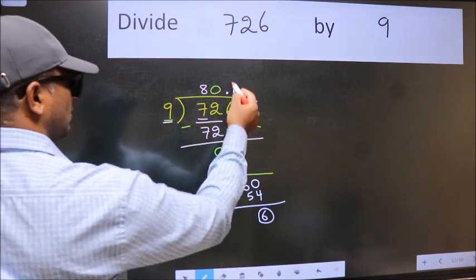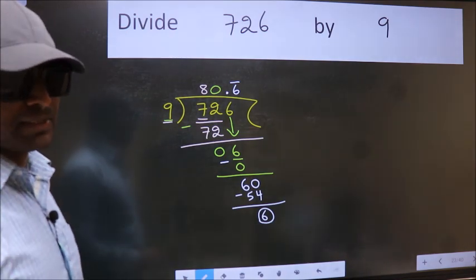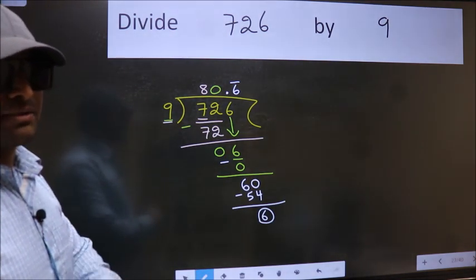That means we get a bar on this number. Did you understand where the mistake happens? You should not make that mistake.